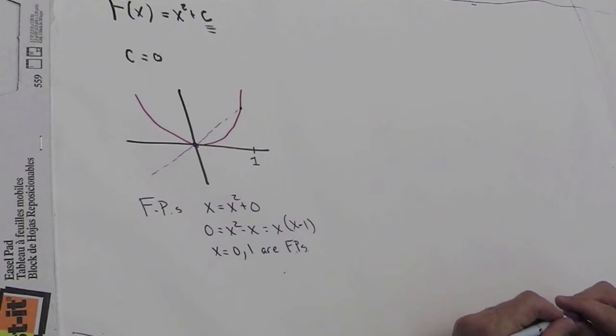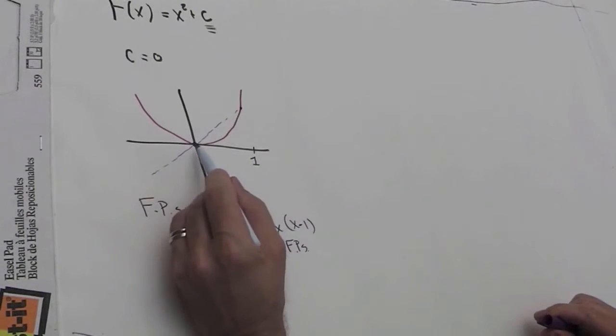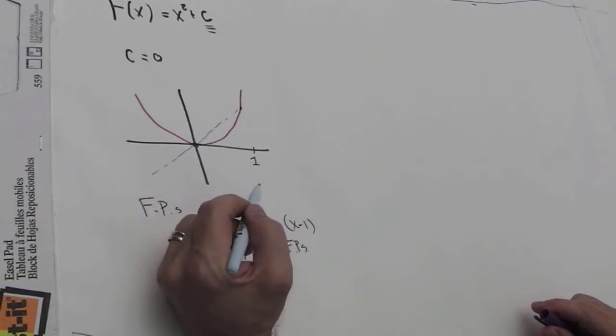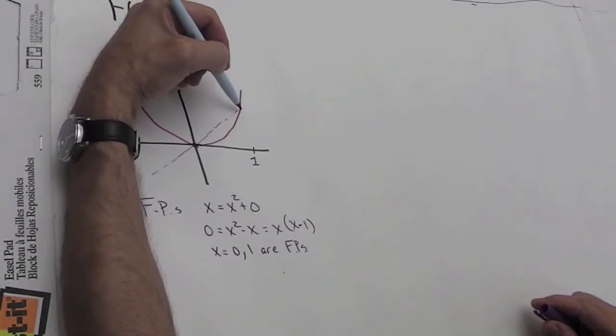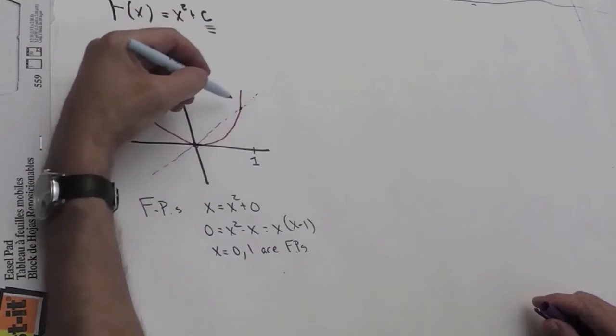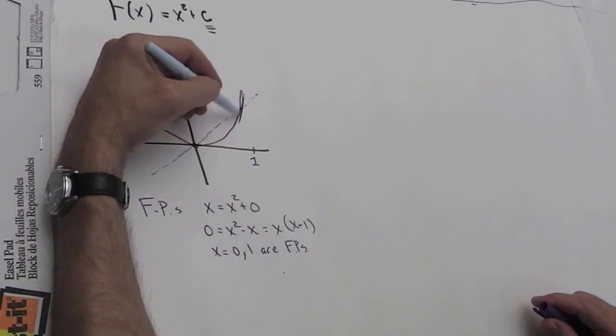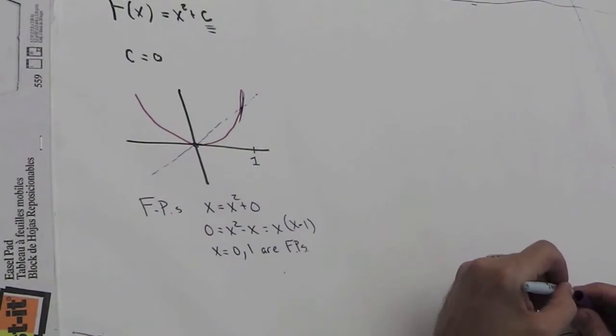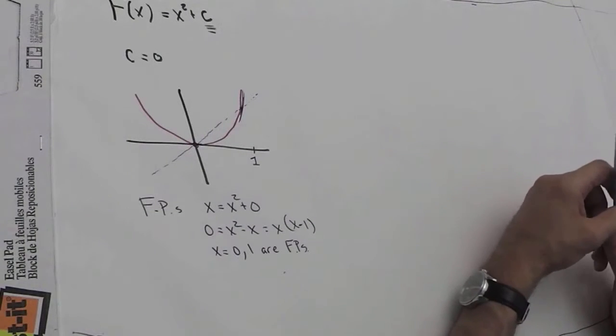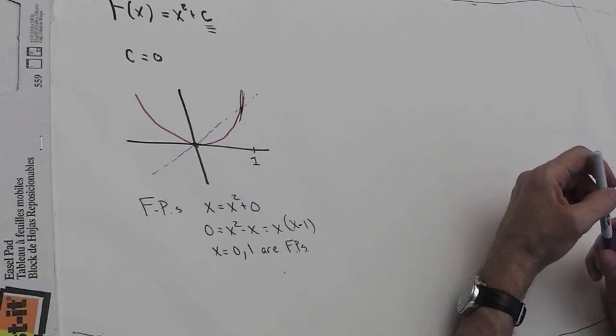And in fact, we can go further. We can just look at the, we can eyeball the slopes here and we can see that the slope at 0 is 0. So that's going to be an attracting fixed point. And the slope at 1, if we compare the slope at 1 just again by eye, we see that that's going to be greater than 1. And that'll be a repelling fixed point. So that's the situation for c equals 0.